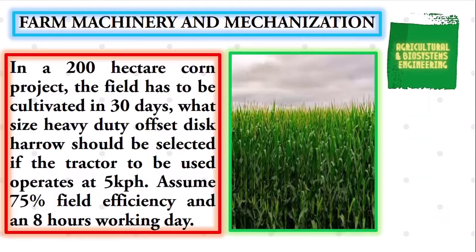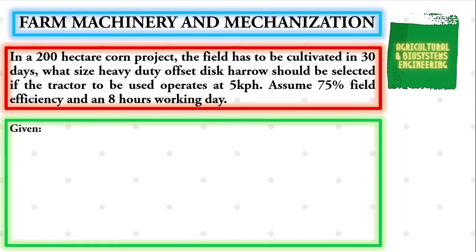We will be solving this problem: in a 200 hectare corn project, the field has to be cultivated in 30 days. What size heavy duty offset disc harrow should be selected if the tractor to be used operates at five kilometers per hour?